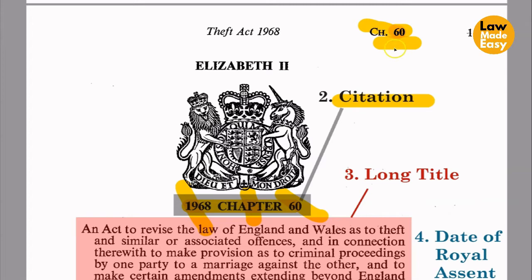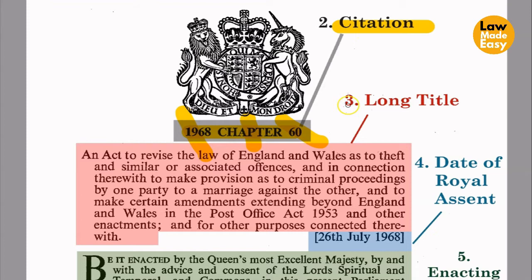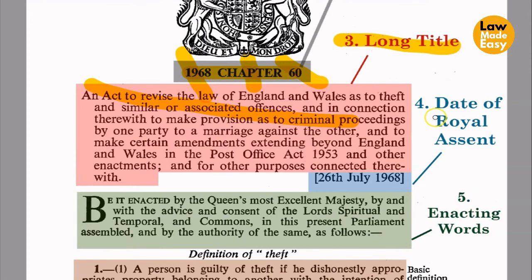Third is the long title. The long title gives important information about what the statute is about. For example, the long title of the Theft Act 1968 shows that the Act also covers associated offences — importantly, this tells us where to look if we come across any associated crimes. The long title also seeks to provide the general purpose of the Act. Fourth is the date of Royal Assent, given here as 26th July 1968 — the date when the Bill was formally converted into an Act through Royal Assent.